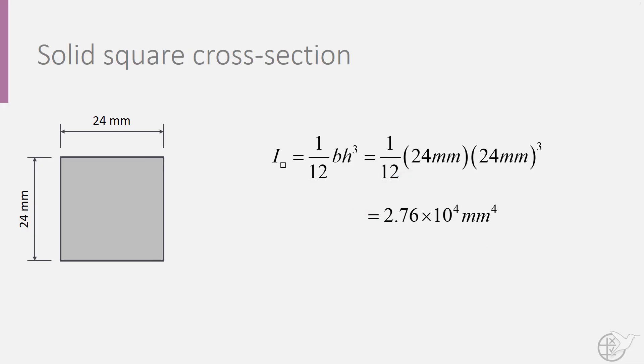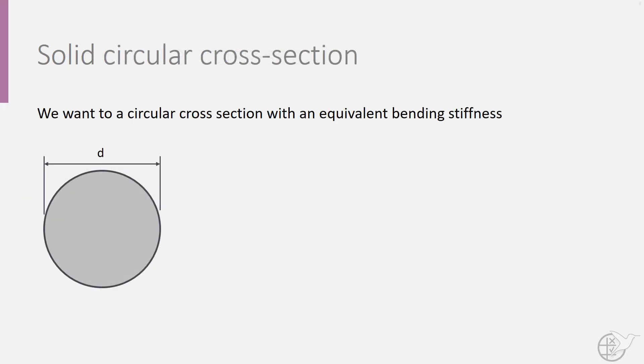Now let's see what would happen if we use a solid circular cross-section. The moment of inertia for a circular cross-section is given by the following formula. If we equate this formula to the moment of inertia of a square cross-section,